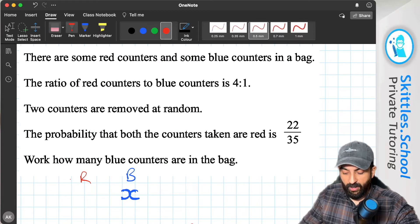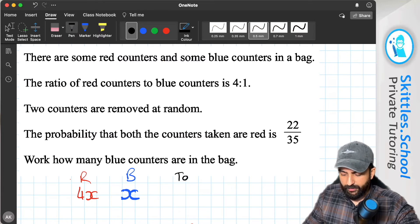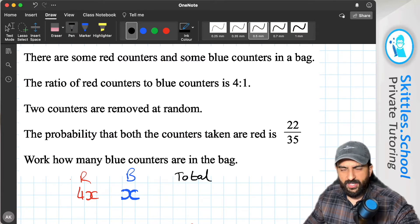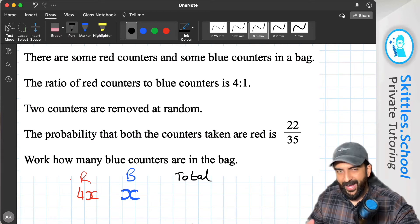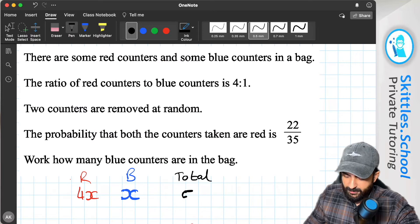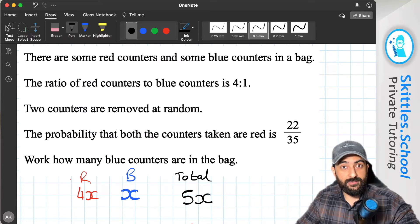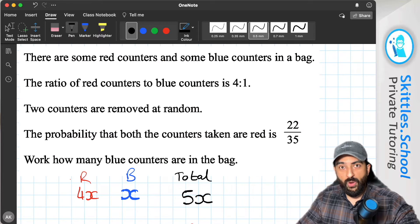Red counters are 4x. And in terms of x, the total then, in terms of x, would be 4x, add another x, makes 5x. So in terms of x the total is 5x. Now we can use this information to draw a probability tree.